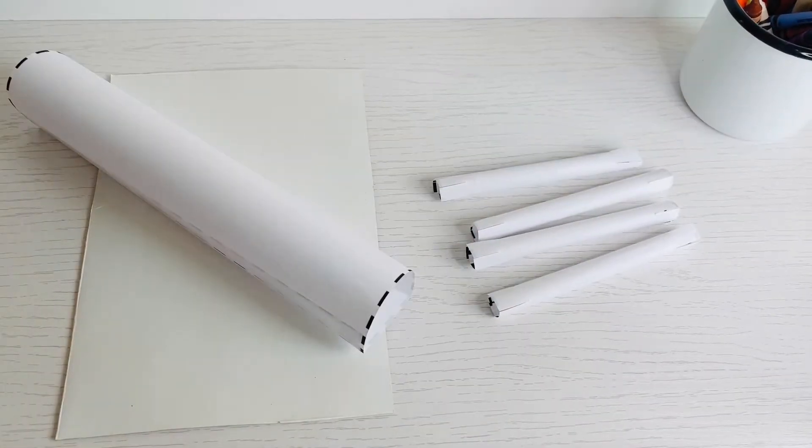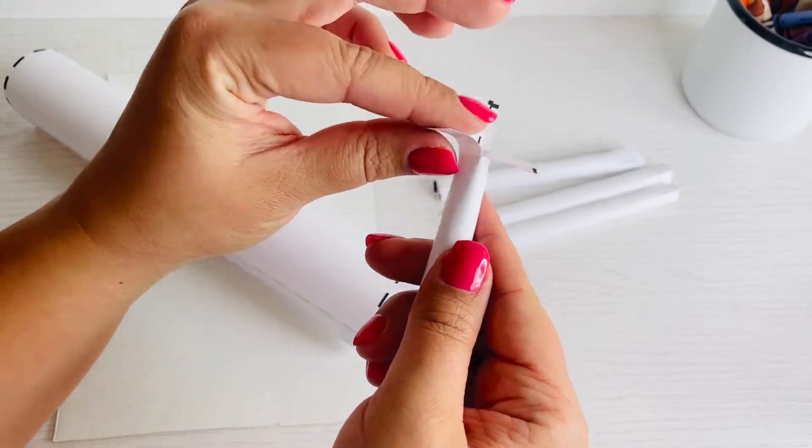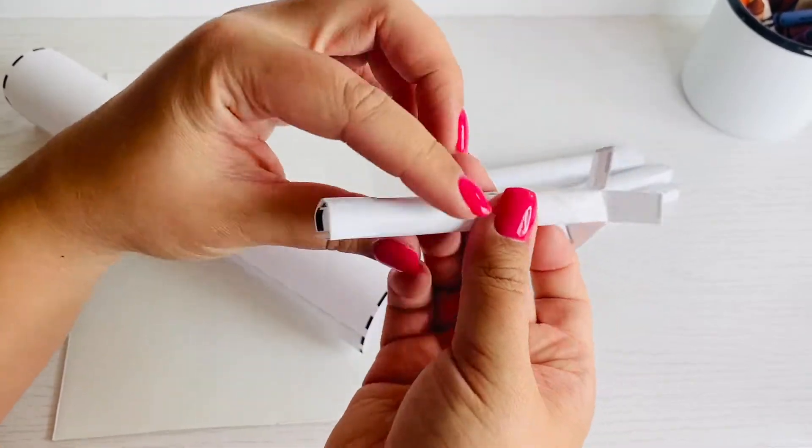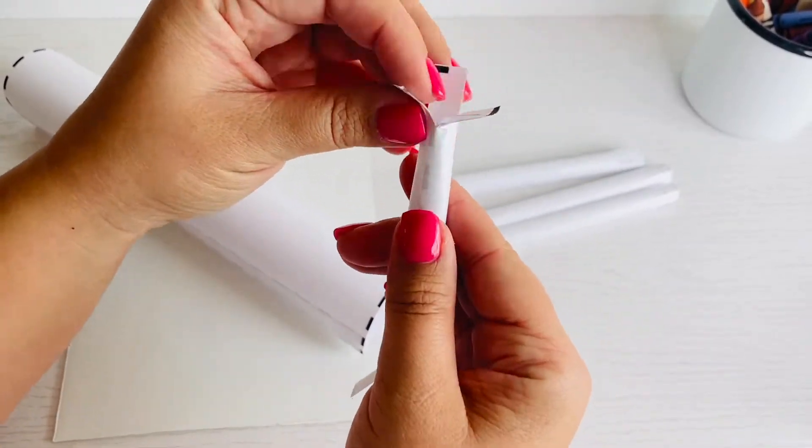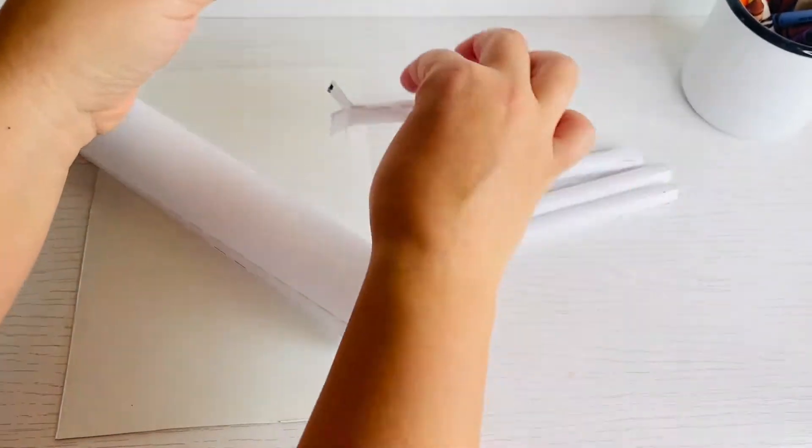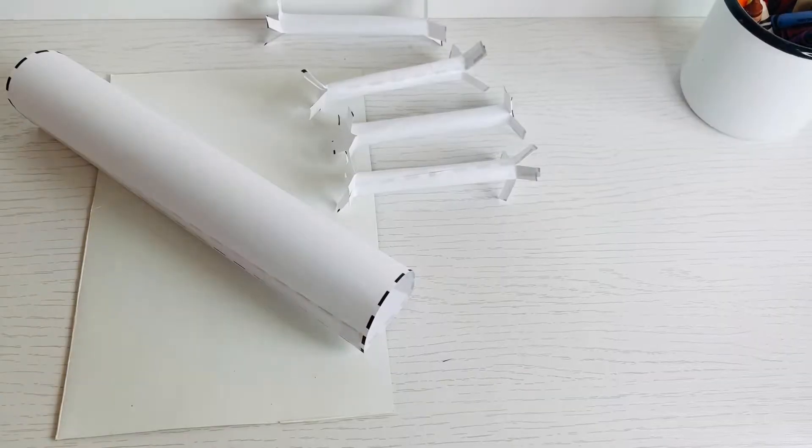Fold back the slits that you cut on each of the tubes. It will make the tubes look like pretty flowers but it will help them stay sturdy when you tape them onto your track and the extra cardboard.